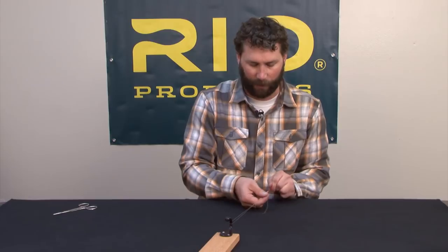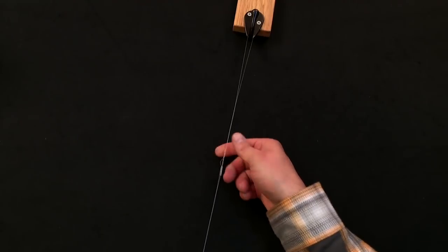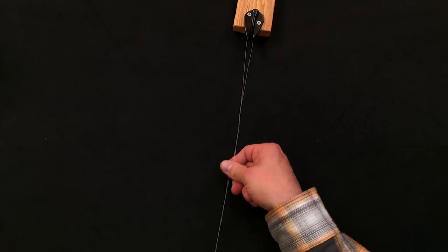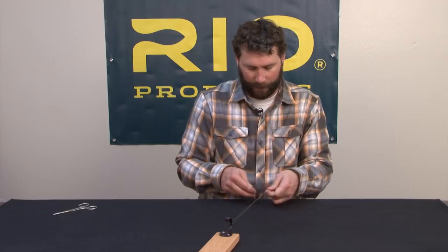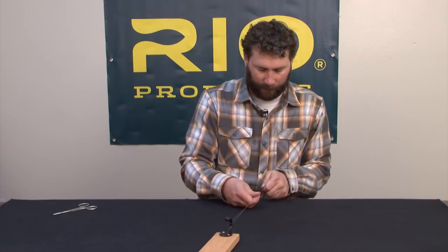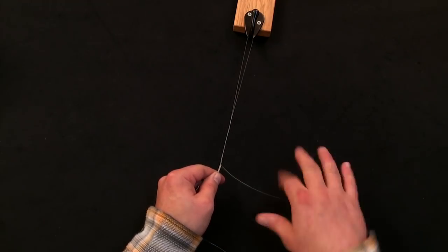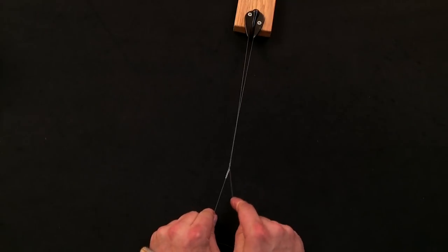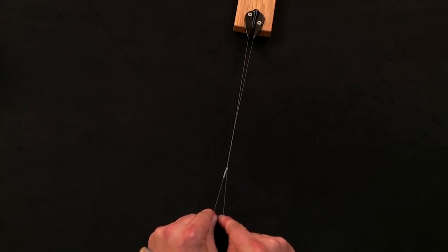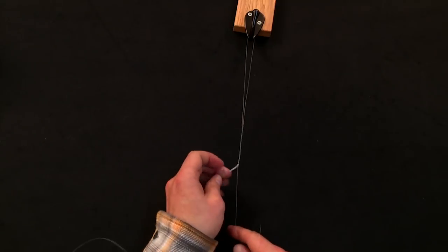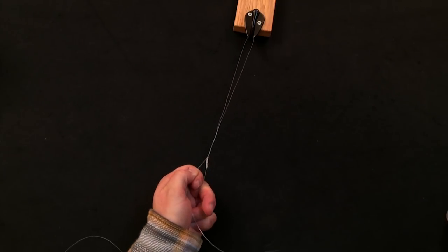And then I'm going to run the slack out of the knot until I get a very nice small profile. Moisten that so it comes down nice and easy, and I'm left with this tag end to trim.